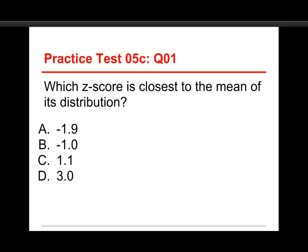The first question in this test is, which Z-score is closest to the mean of its distribution? And the choices are negative 1.9, negative 1, 1.1, or 3.0.